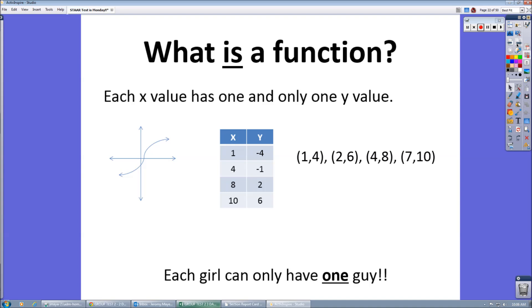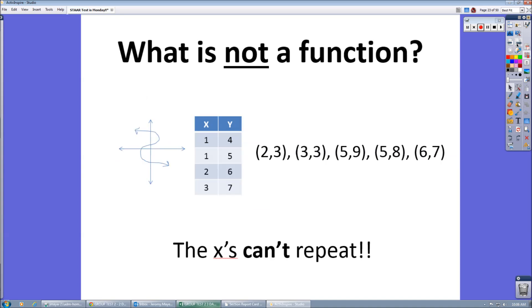Not a function only uses one X value, or you could use the vertical line test and cross the graph just one time. Not a function uses an X value more than once. You can see that those are repeated X values. And when I do the vertical line test, see how I cross that graph more than once? That makes the graph not a function. The X's cannot repeat.